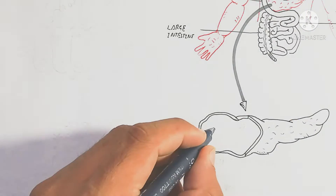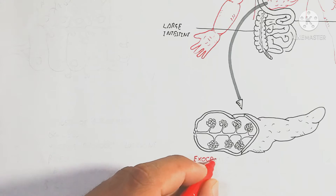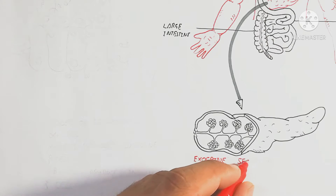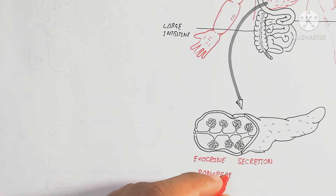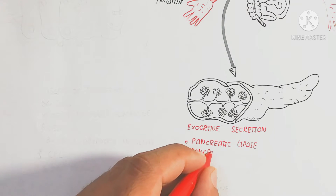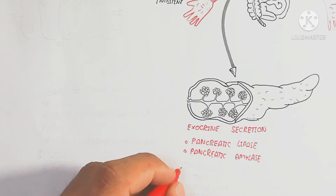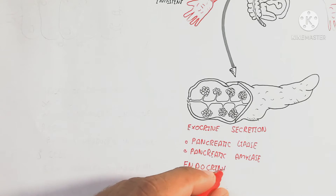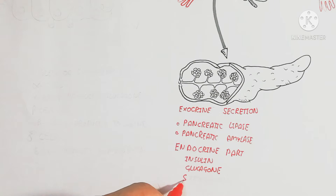Here we will discuss only the endocrine hormones secreted into the blood. These are produced by alpha, beta, gamma, and delta cells. The islet of Langerhans is a globule-like mass of cells inside the pancreas. Its exocrine secretions include pancreatic lipase, pancreatic amylase, trypsin, and chymotrypsin, while its endocrine part produces insulin, glucagon, and somatostatin.